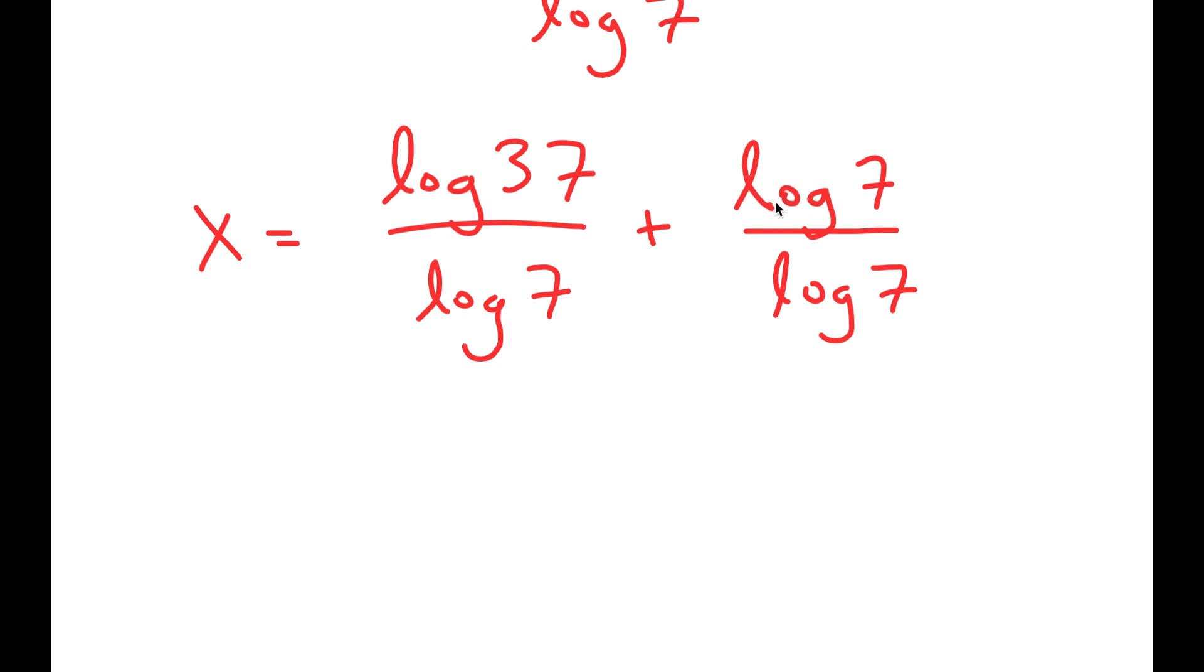So now, these two are going to cancel out. So I get x is equal to log 37 over log 7 plus 1.